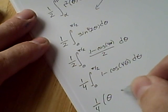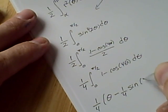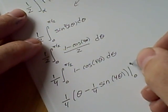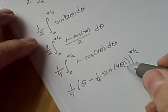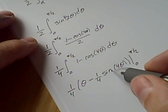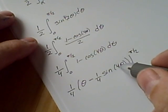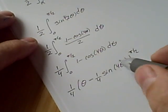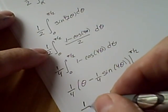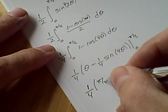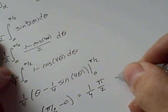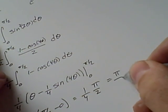This is 1 quarter theta minus 1 quarter sine 4 theta, evaluated from 0 to pi over 2. Now if you notice, this sine is going to cancel at both pi over 2 and 0. Because 4 times pi over 2 is 2 pi, and 4 times 0 is 0. So this term isn't going to make a difference. So we're going to have 1 quarter of pi over 2 minus 0, which is 1 quarter of pi over 2 or pi over 8.